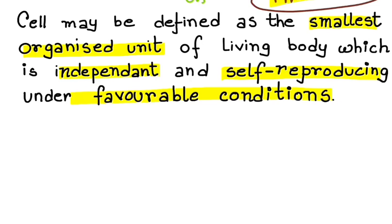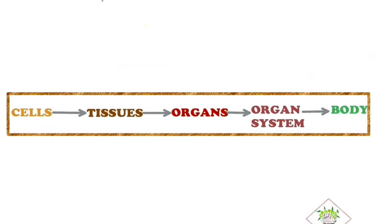Now coming to this flow chart. It is saying that the cells are joined together to form tissues. Tissues in turn are grouped together to form organs. And different organs will work together to form the organ system. And all the organ systems collectively form a body. This flow chart tells us that from smallest cells a large living body can be formed.